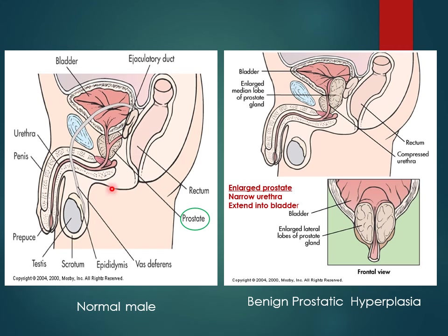This diagram shows the normal prostatic gland at the bladder neck and the normal size. On the other hand, the enlarged prostate has both lobes enlarged. This causes narrowing of the urethral passage, giving rise to obstructive symptoms. If large enough, it also extends into the bladder neck region and the trigone.